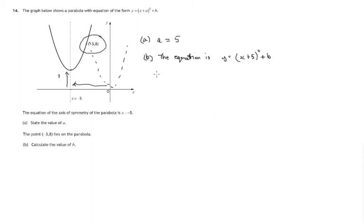So how do we use this information that negative 3, 8 lies on the curve? Well, for the point negative 3, 8, x has the value negative 3, y has the value 8. So these two values satisfy the equation. So if we substitute these two values into the equation, 8 equals negative 3 plus 5 all squared plus b. The only value we don't know in this is b, so we should be able to find that.